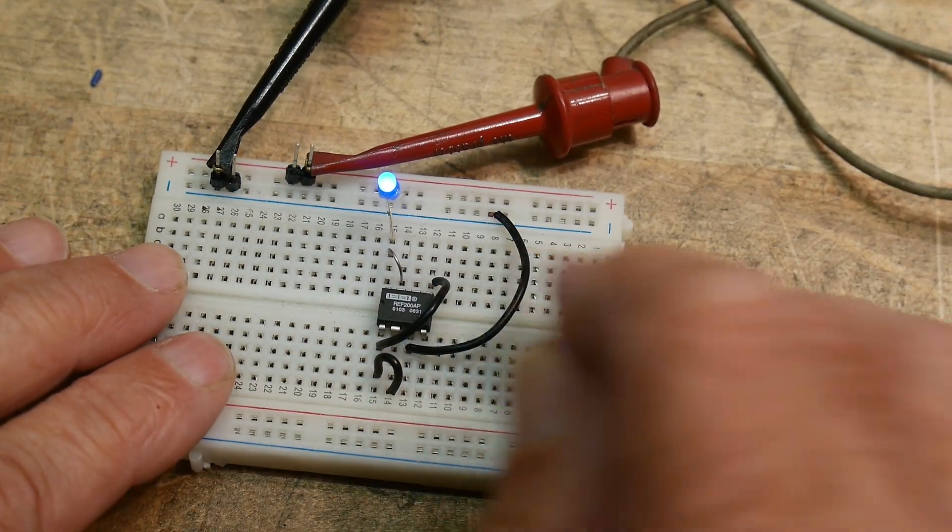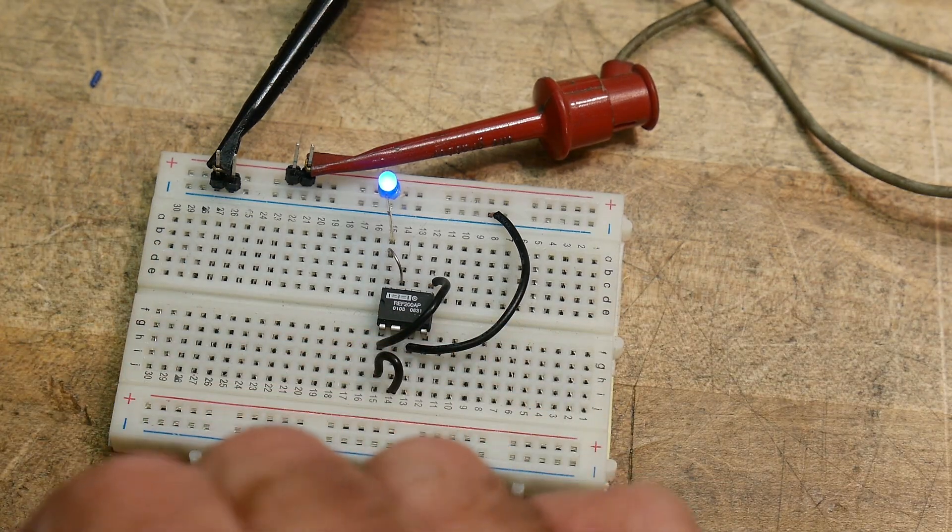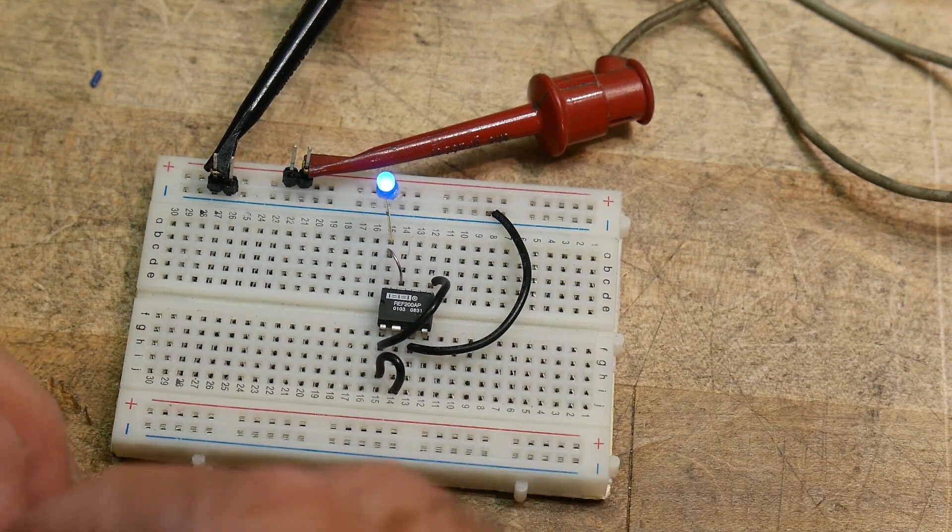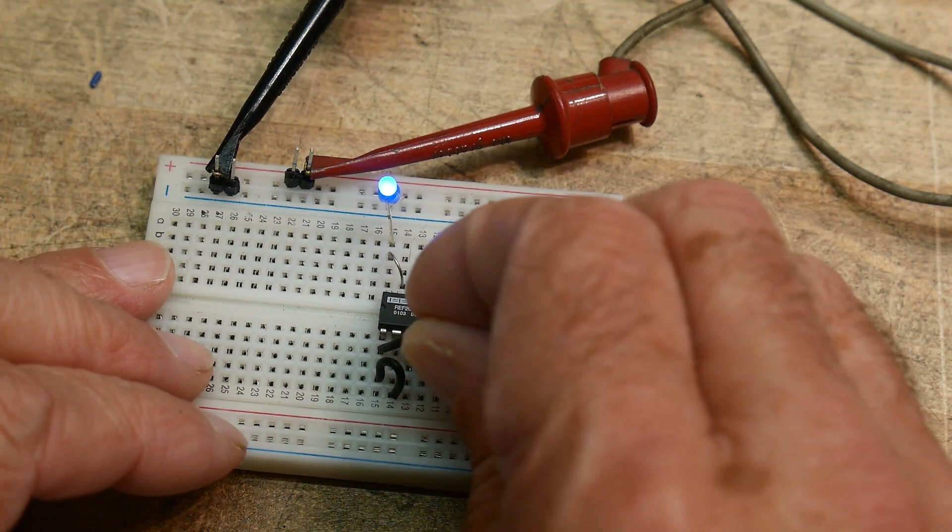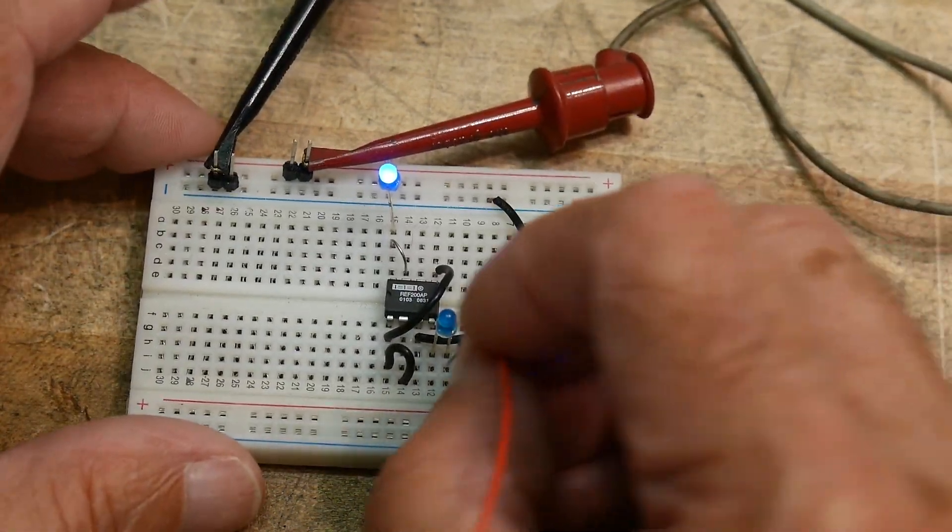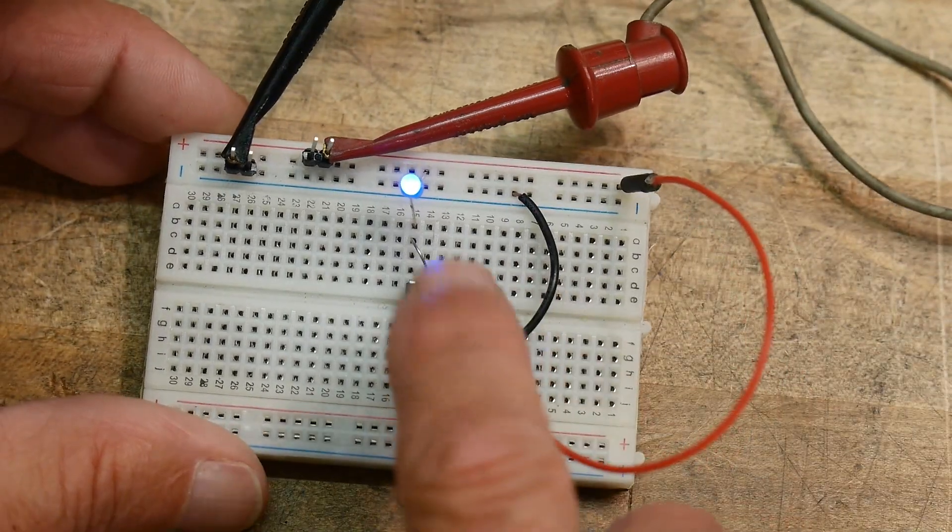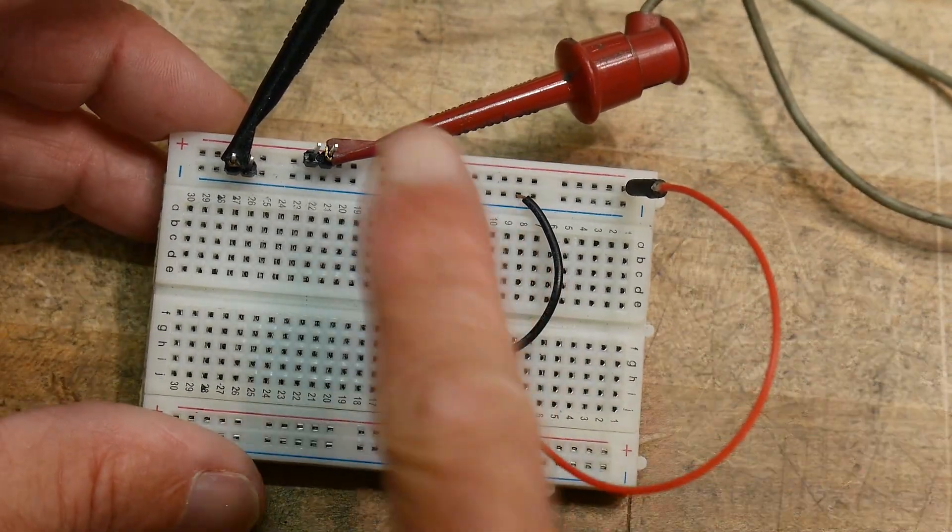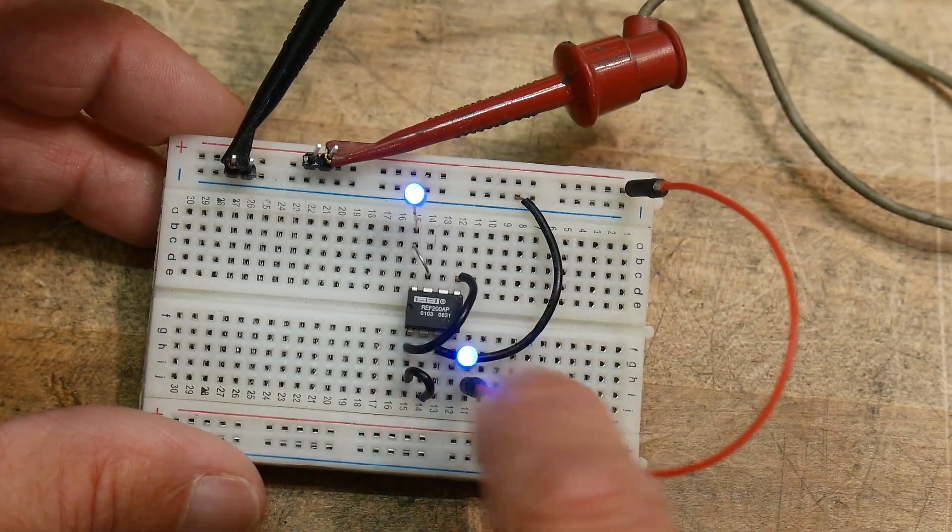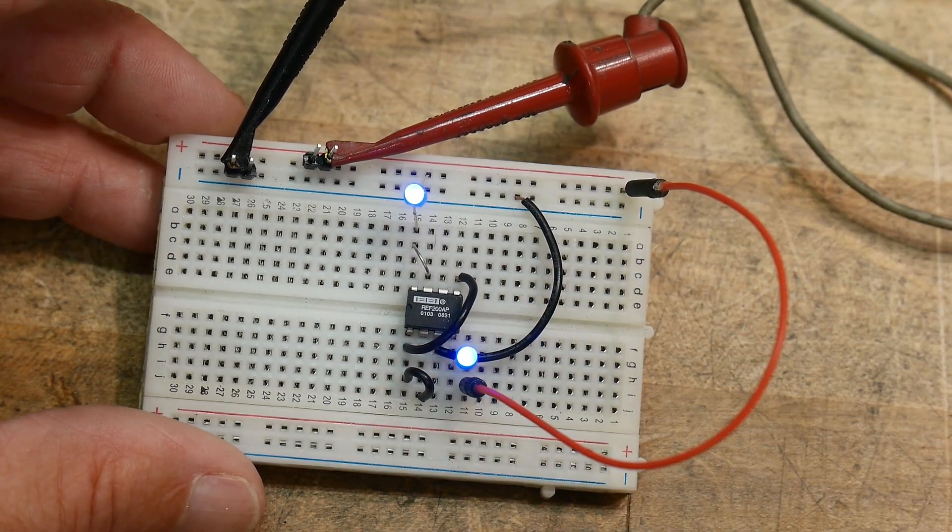So let's see here. So one, two, three, four. Let's see here. Okay. Let's put the, okay. And we need to hook that up to 12 volts and there we go. We get our mirror. So we have 200 microamps on this side. We also have 200 microamps on that side. So our current mirror works. Okay.